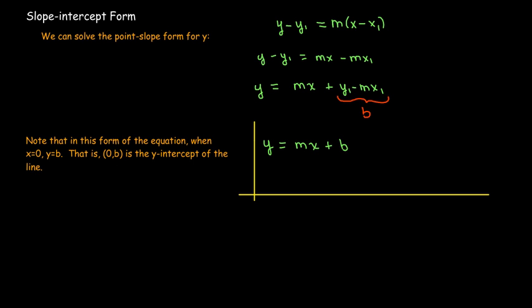I want to emphasize here that the number b is not the y-intercept. Y-intercepts are not numbers, they are points. So the y-intercept is (0, b). But this number b tells us what the y-intercept is. And so this form of an equation for a line is called the slope-intercept form.